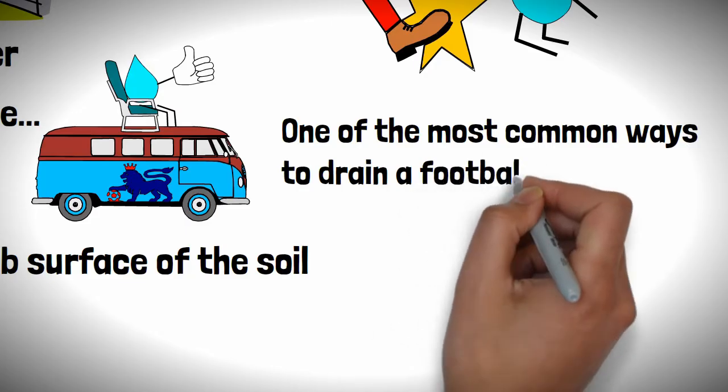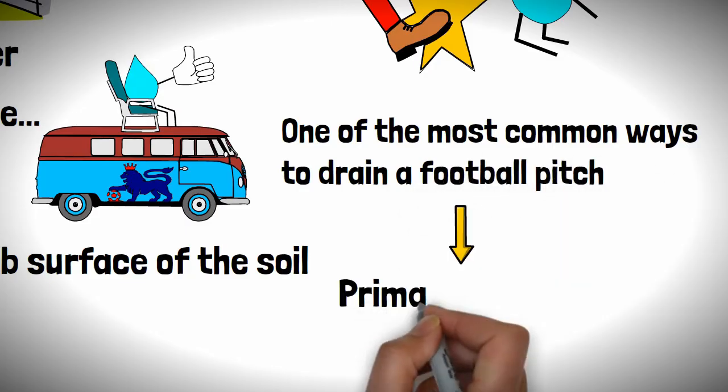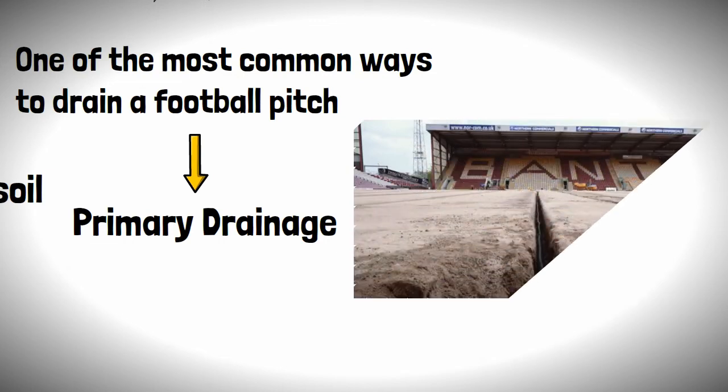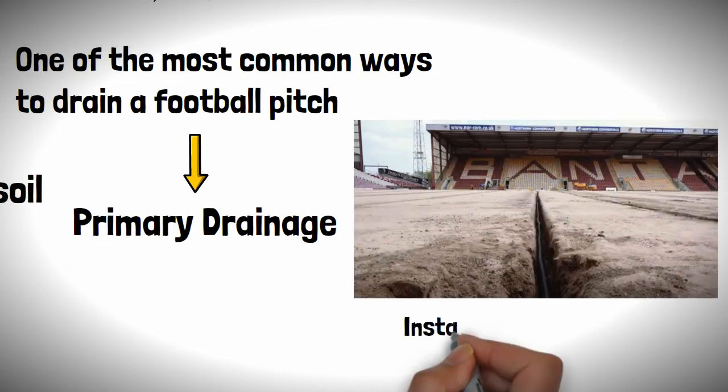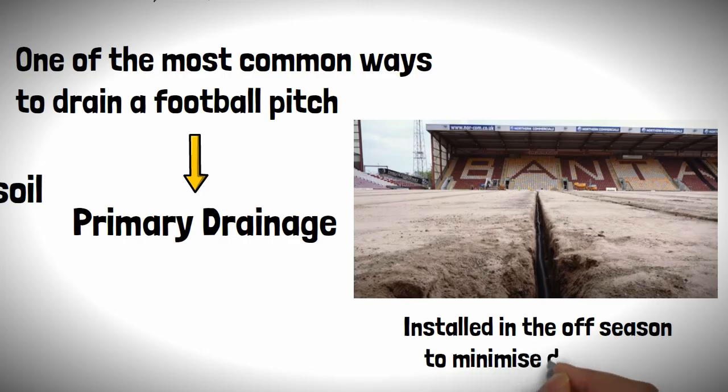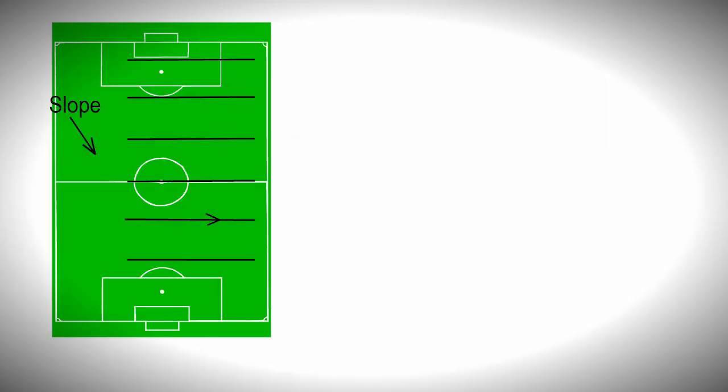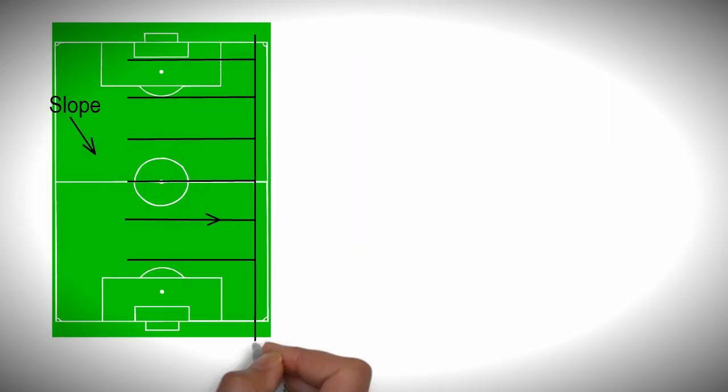One of the most common ways to drain a football pitch is a technique called primary drainage and is the main method of draining pitches for professional football teams and will be installed in the off season to minimize disruption. This essentially consists of multiple drains which run across the width of a pitch, which then feed into the main drainage pipe, which takes the water away from the pitch.